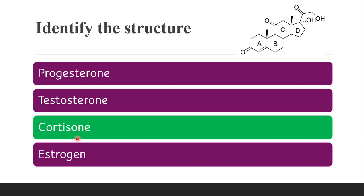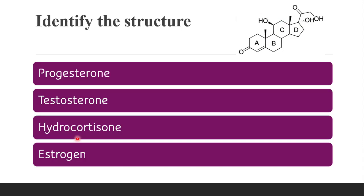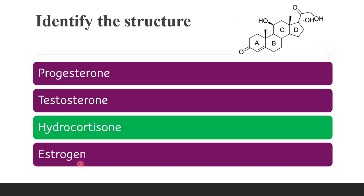Next question: identify the structure. Again checking two probabilities — it has CH2OH at position 17, so it is a glucocorticoid. At the 11th position it has a hydroxyl group, so the correct answer is hydrocortisone. The options were progesterone, testosterone, hydrocortisone, or estrogen — the correct answer is hydrocortisone since it contains a hydroxy group at the 11th position.